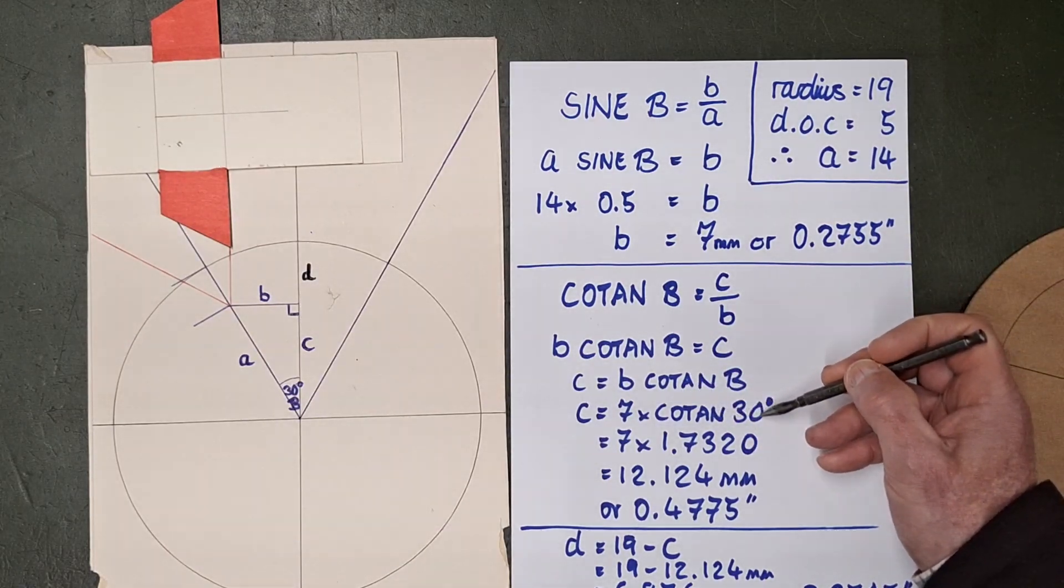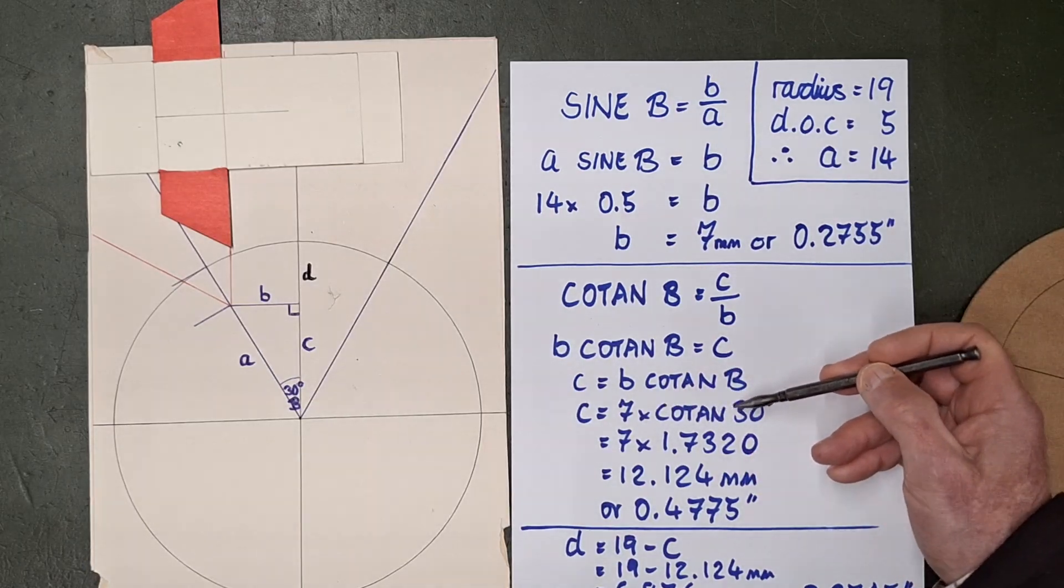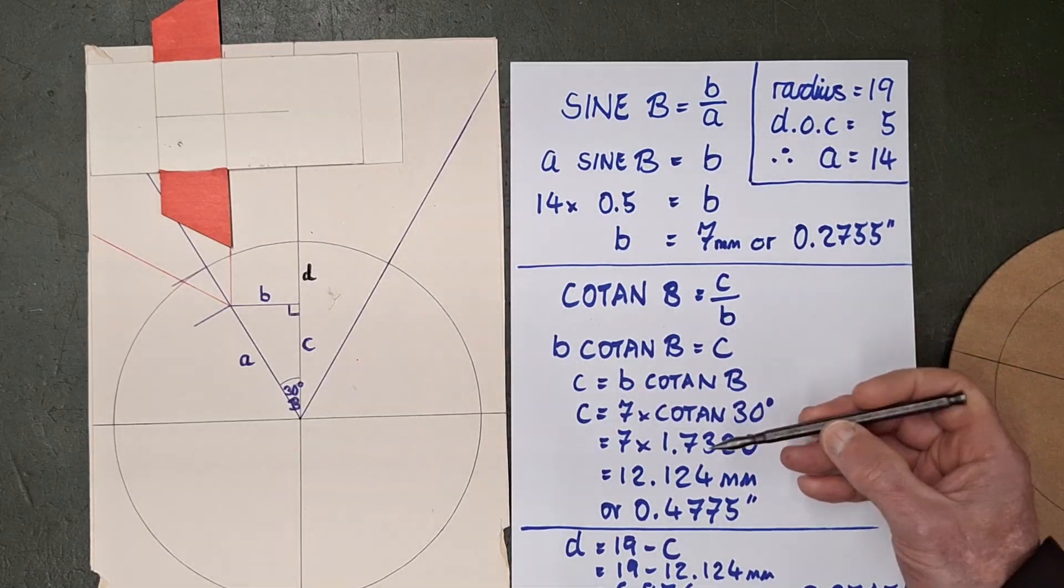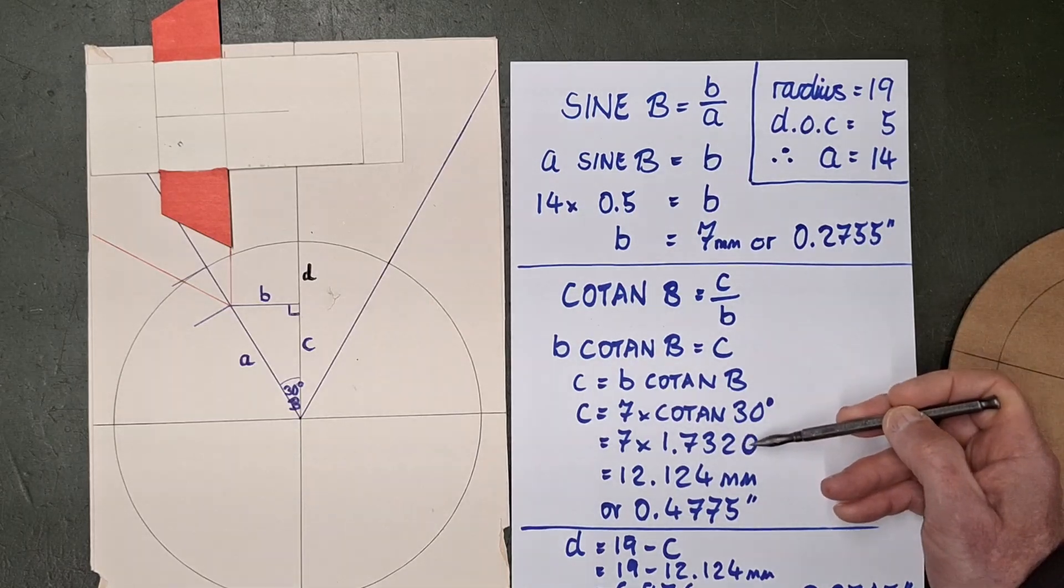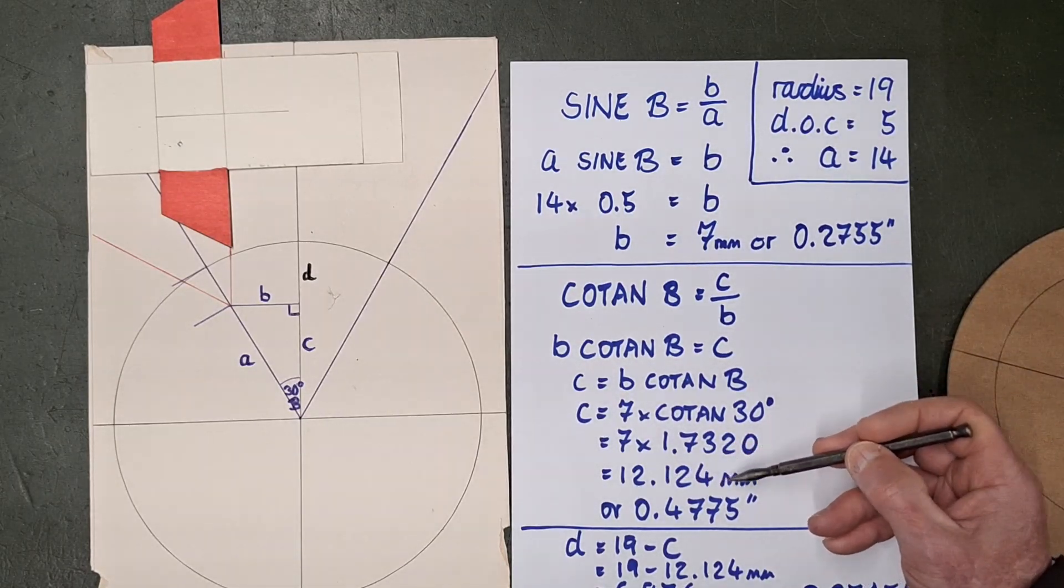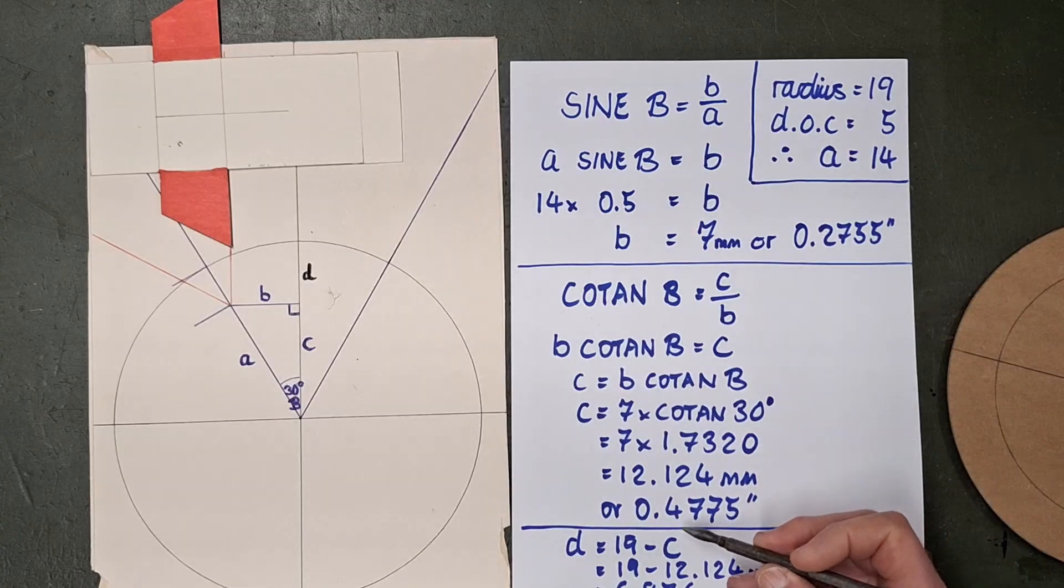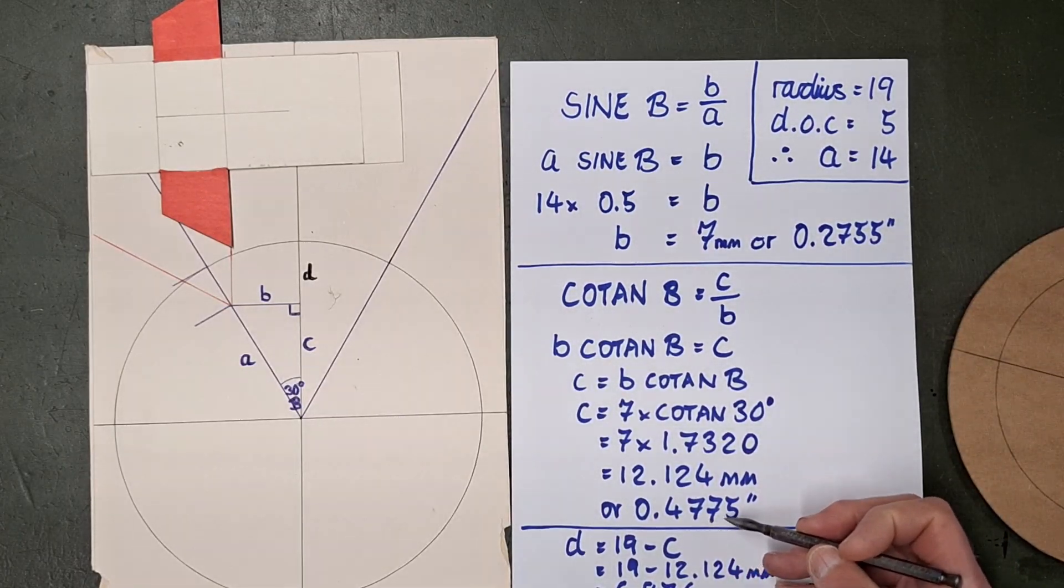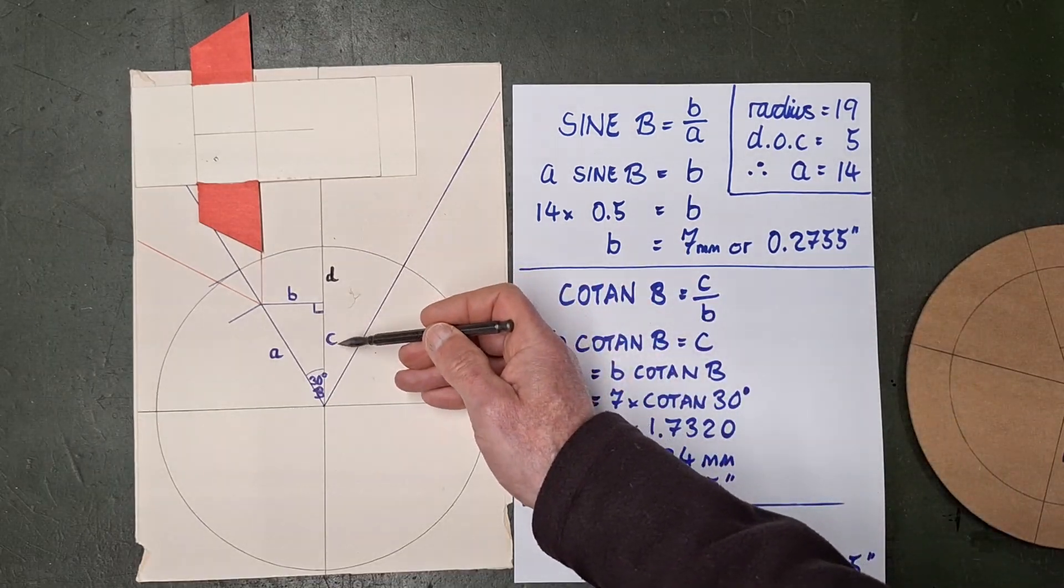So C is 7, which we've got from measuring B there, times the cotangent of 30 degrees. So C is 7 times the cotangent of 30 degrees, which is equal to 7 times 1.7320, which gives 12.124 millimeters, or by dividing by 25.4, the equivalent of 0.475 inches.